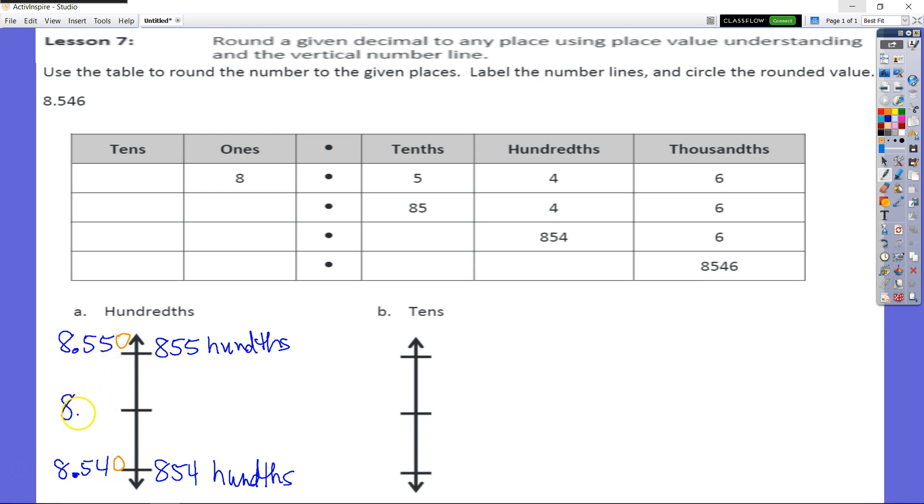Well, we should know that it is going to be eight and 545 thousandths now. So these three points are what we need to determine where our number is going to fall on our number line.